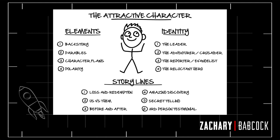So let's head to the slide deck so I can show you exactly how to do this. This is how you build an attractive character for your personal brand — this is character building. The attractive character is a concept I learned from Russell Brunson's book Dotcom Secrets. This is an actual image I pulled from the book. Now there are three key components of an attractive character, and inside each one are a bunch of other moving pieces.